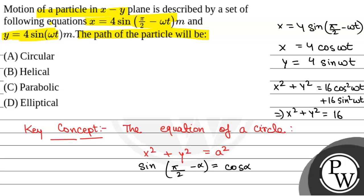This is of the form x square plus y square is equal to a square. This is the equation of circle. So, the path will be circular. The correct option is option a.